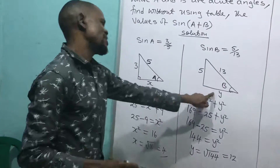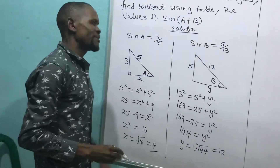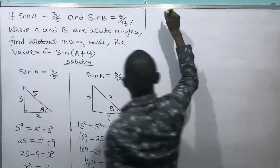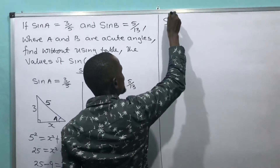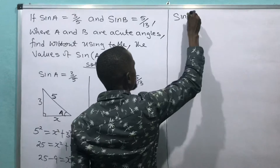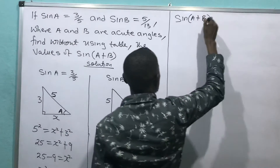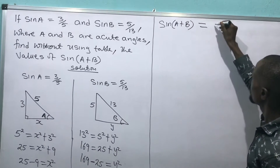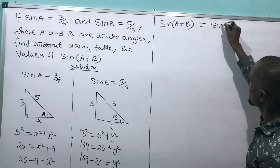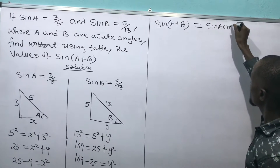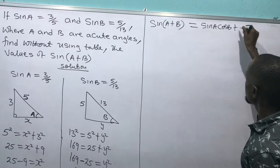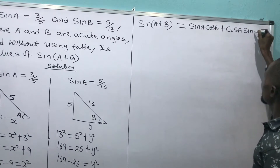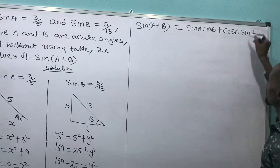I have now found both missing sides. To find sin(A + B), I use the compound angle formula: sin(A + B) equals sin A cos B plus cos A sin B.